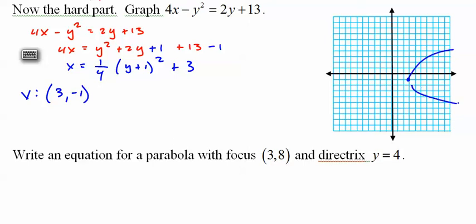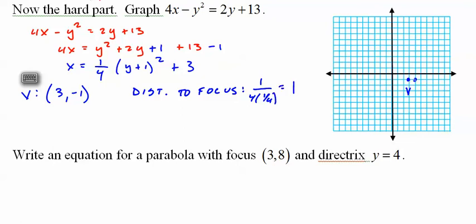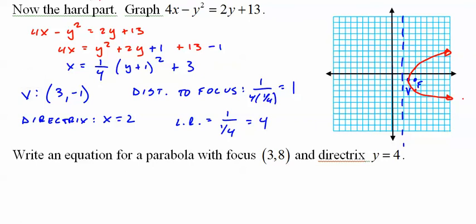It's going to go up the distance to the focus. We just did this, 1 over 4 times 1 fourth is 1. Therefore, the directrix is down here at x equals 2. And the latus rectum is 1 over 1 fourth is 4. So we're going to go up 2 and down 2 from the focus. Graph. Tricky when it's negative, people forget it goes the other way or it goes down or whatever. So you have to keep all these things in mind.